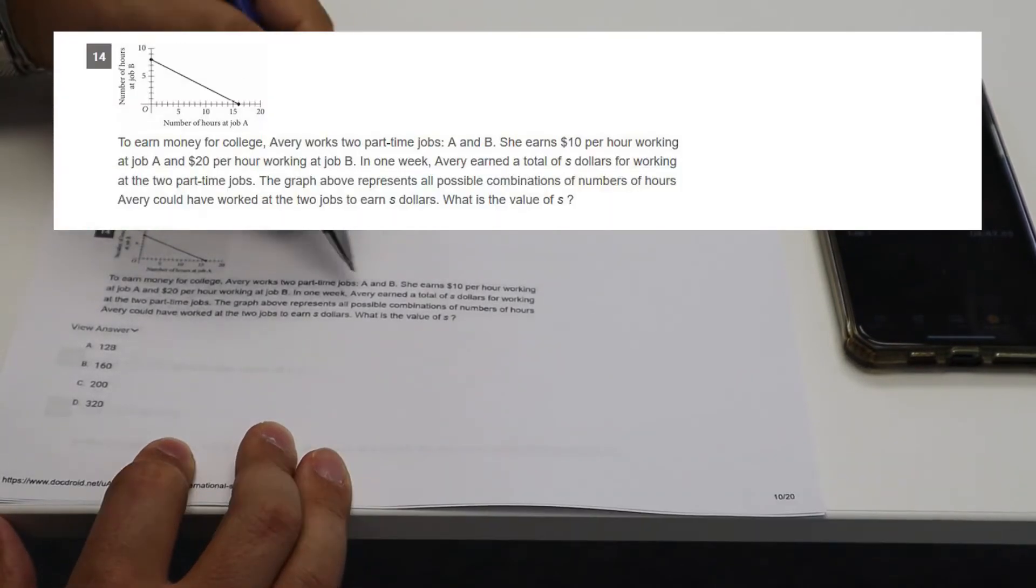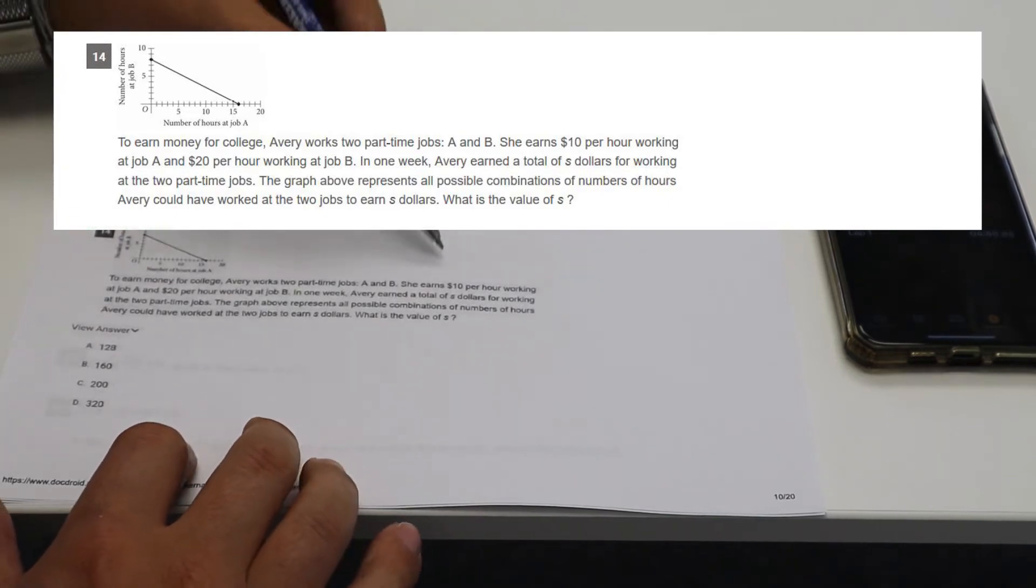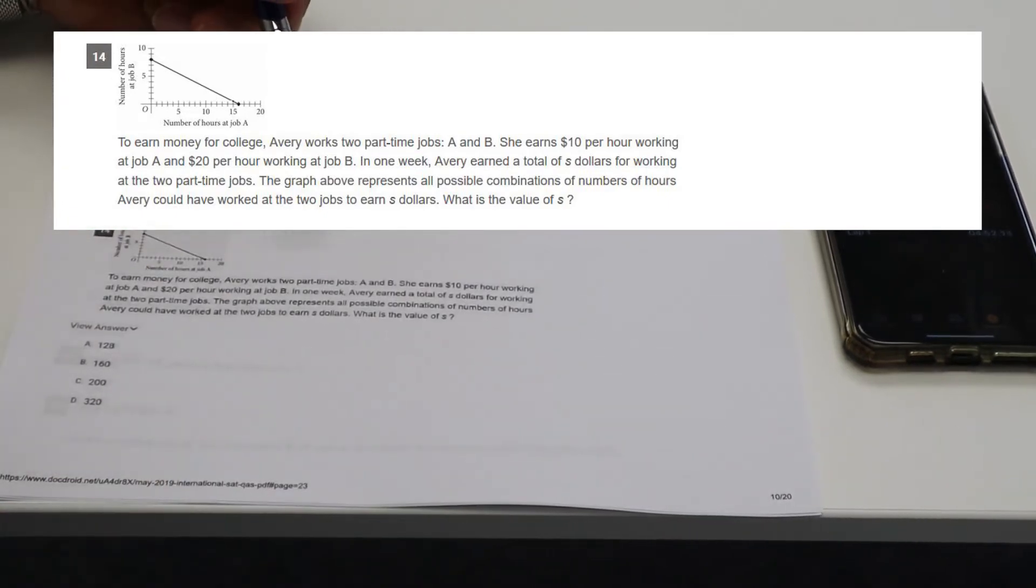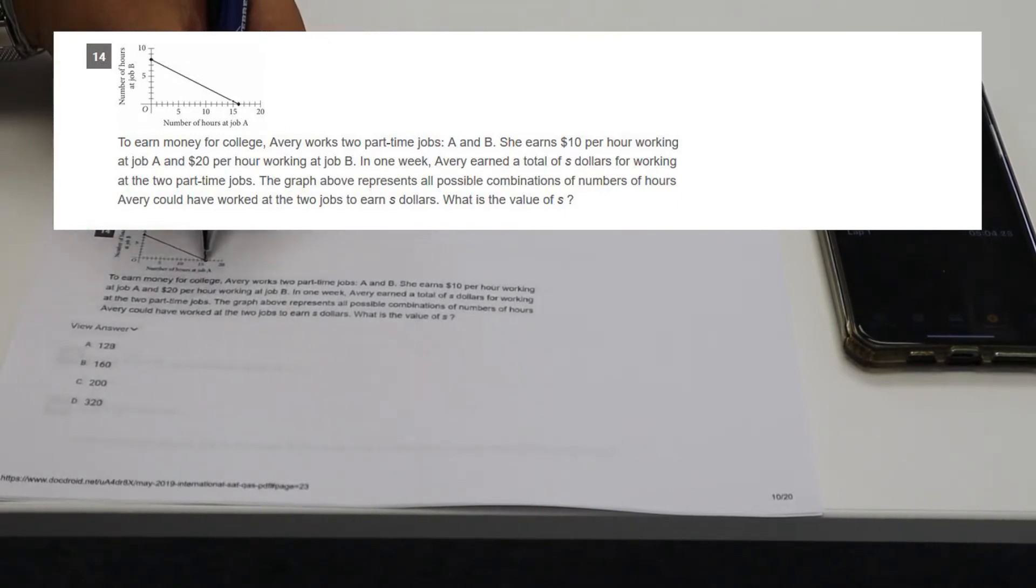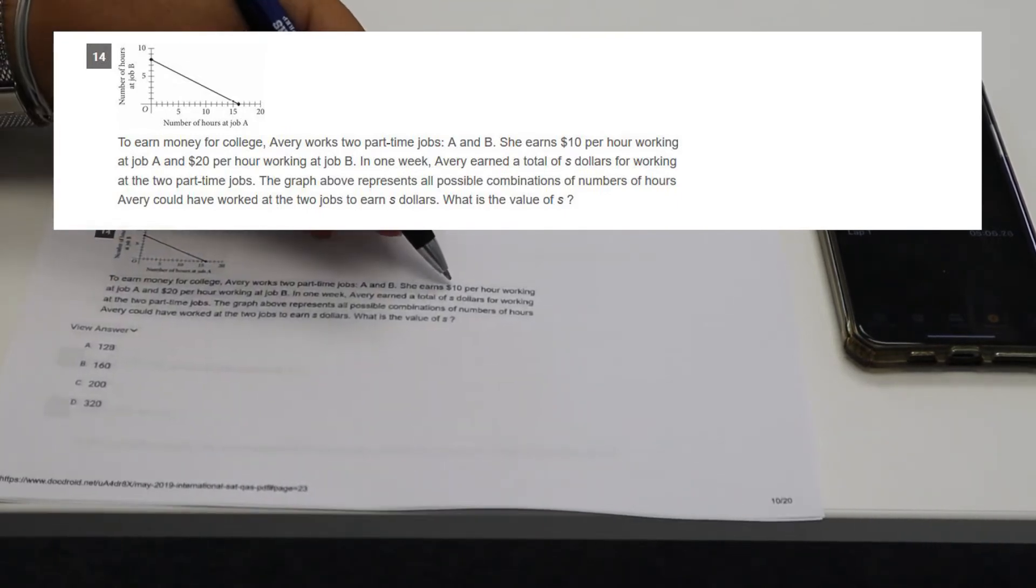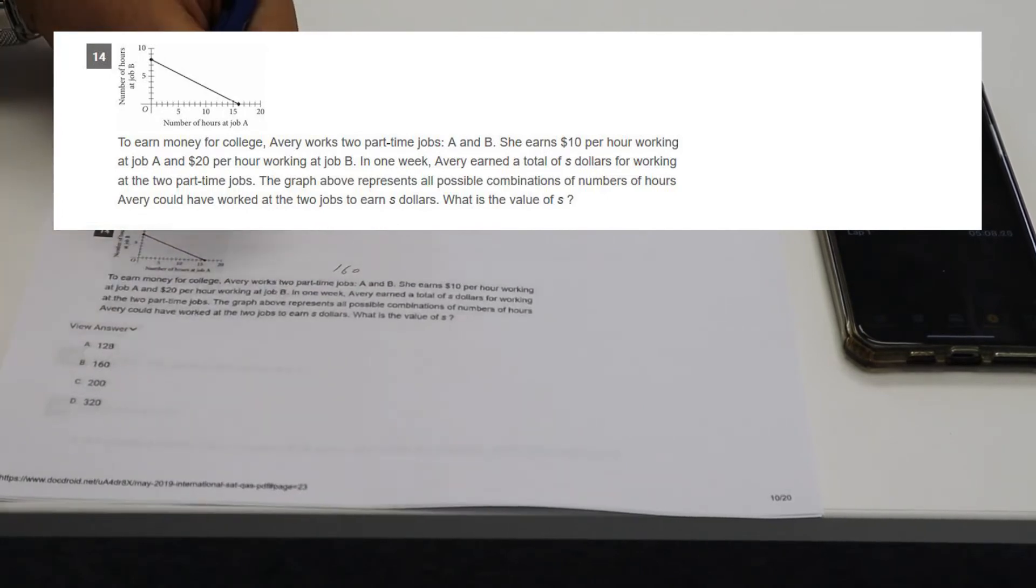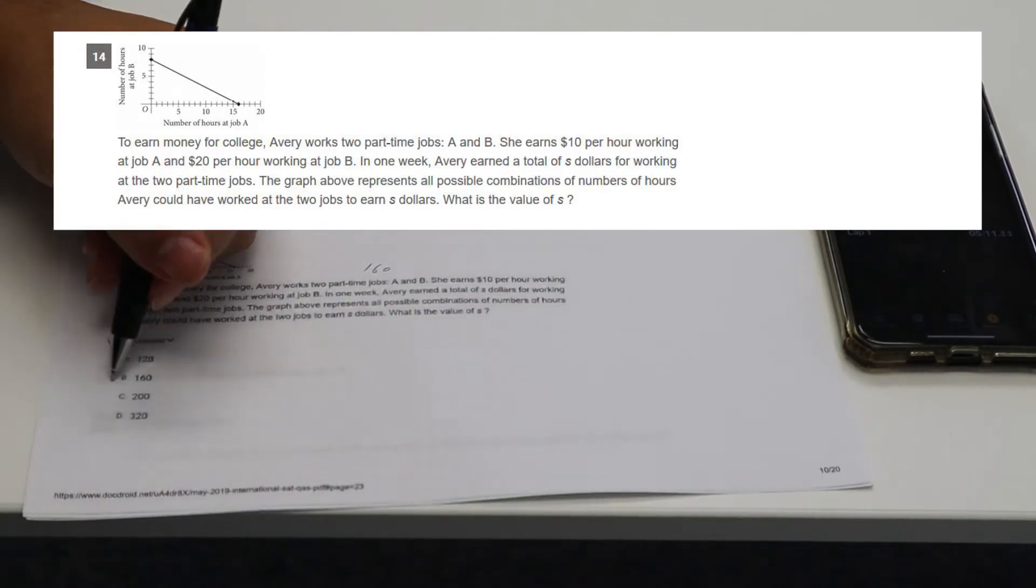Two part-time jobs, A and B, sort of a chart. $10 an hour working at job A, $20 at job B. In one week, a total of S dollars. So the total, we want the total. What's a possible total. So 16 hours of job A would have been $10 an hour. So then 160 or eight hours of job B. So 160.